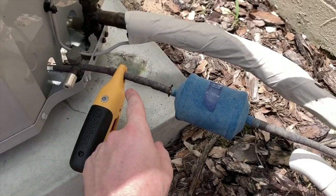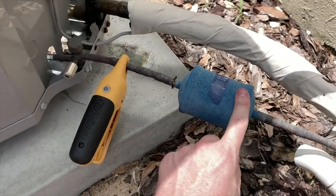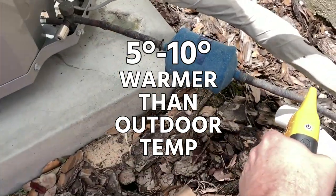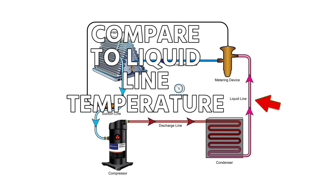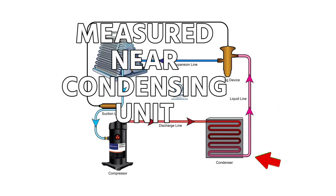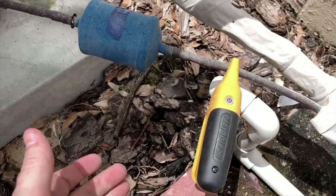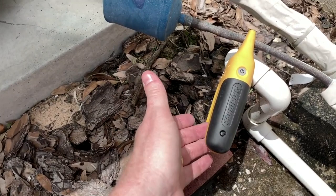Liquid line temperature — we did a separate video on how to locate your liquid line temperature. In general, your liquid line temperature is going to be about five to ten degrees warmer than your outdoor temperature on normal modern equipment. That's going to be typical, but you're going to want to know something about your equipment before you come up with that. That's what we call approach — if you take your outdoor temperature and compare it to your liquid line temperature measured near the condensing unit, you should see that liquid line temperature is five to ten degrees warmer than your outdoor temperature.